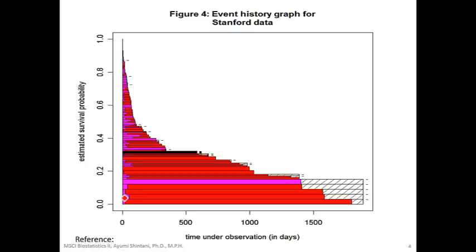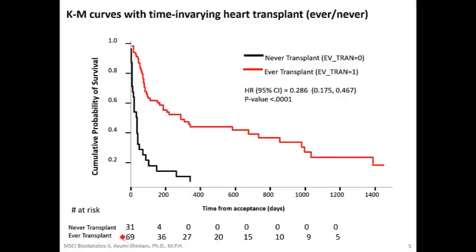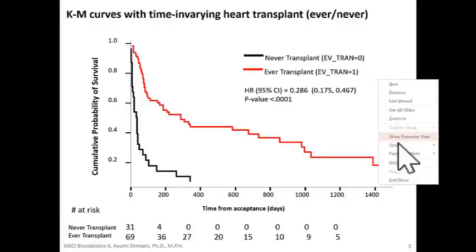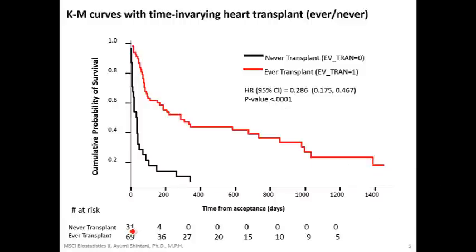Looking at the event history graph, the pink period shows the time before a patient received a transplant, and the red timing shows the time after they actually did receive a transplant. At time zero, not many people actually received a transplant — the 69 is exaggerated. The 69 represents the number of patients who eventually did receive a transplant, which is wrong.